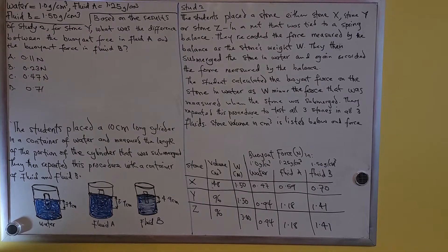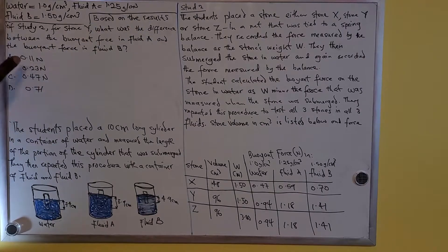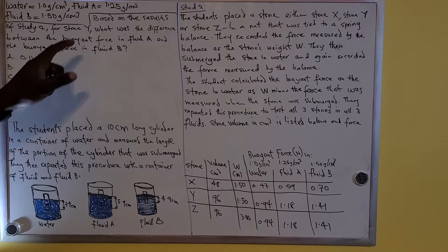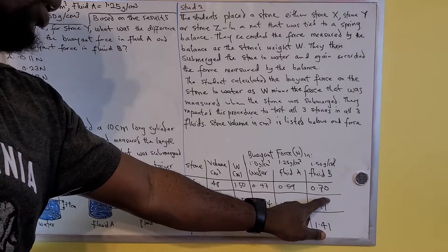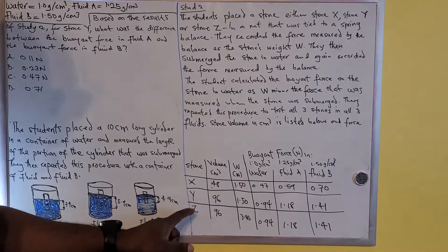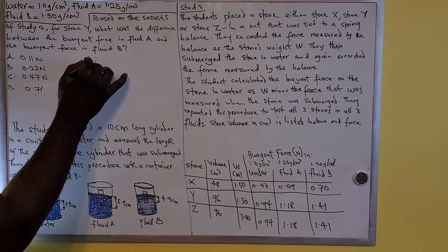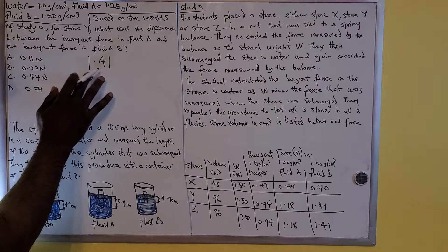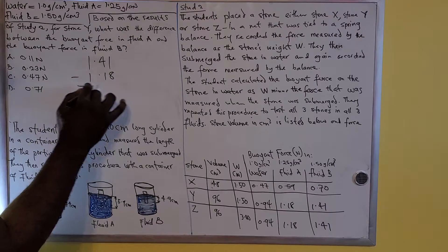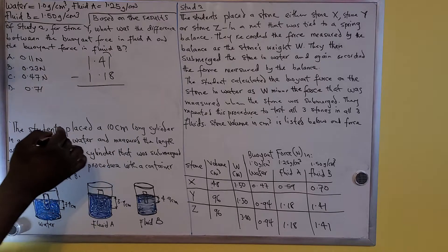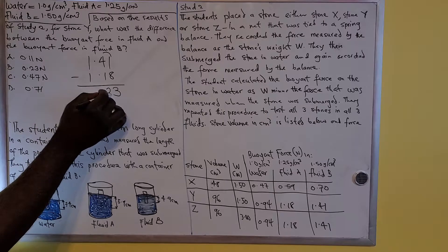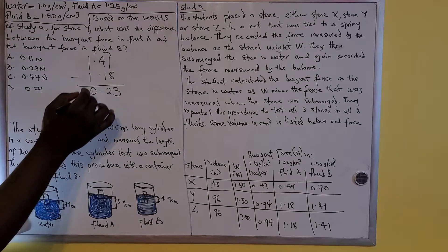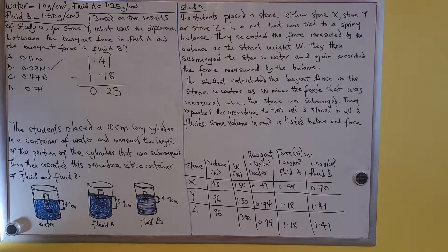Question 15: based on the results of study 2, for stone Y, what was the difference between the buoyant force in fluid A and the buoyant force in fluid B? Difference means subtract, so you do 1.41 minus 1.18. Adding one to the hundredths gives 11; 11 minus 8 is 3, carry the 1; 3 minus 1 is 2; 1 minus 1 is 0. So your answer is 0.23, which is option B for question 15.